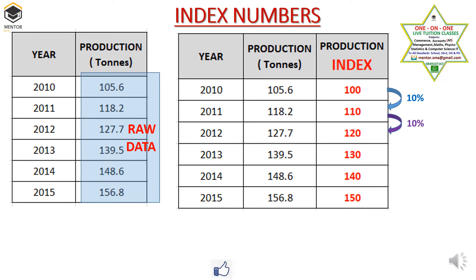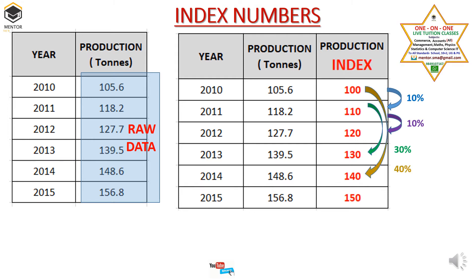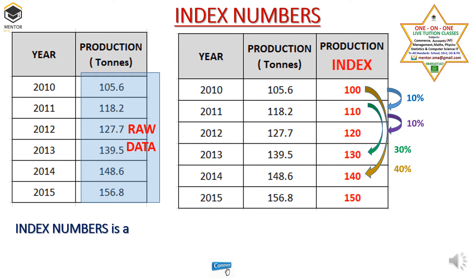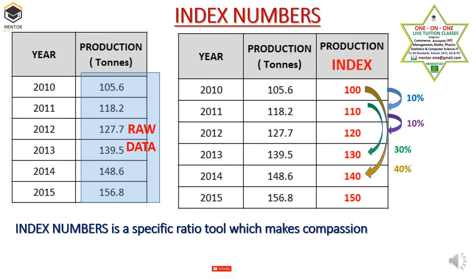Same like this, if I am going to compare the data of 2011 and 2013, I can easily find there is a 30% increase in production from 2011 to 2013. If I want to compare from 2011 to 2014, there is a 40% increase in production. So in this way, index number will help us to easily find what sort of changes are there on one particular variable over a period of time. So in simple terms, index number is a specific ratio tool which makes comparison more easily. This is all about our index number with an example.